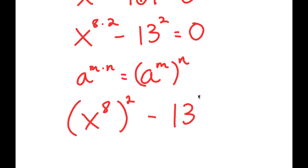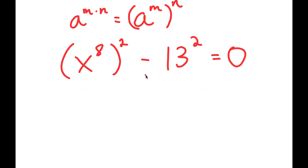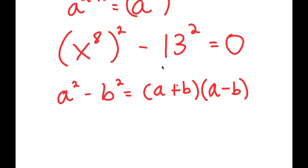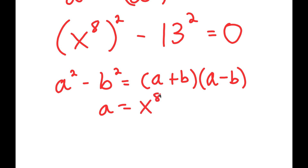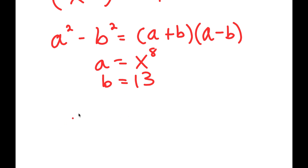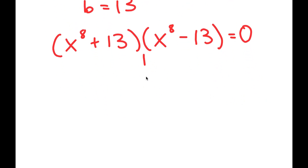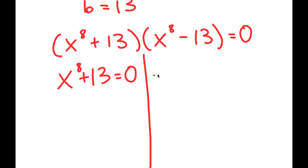Now I have x to the power of 8 squared minus 13 squared equals 0. I'm going to use the difference of squares property: a squared minus b squared equals a plus b times a minus b. Here, a equals x to the power of 8 and b equals 13. So I get x to the power of 8 plus 13 times x to the power of 8 minus 13 equals 0, giving me two equations: x to the power of 8 plus 13 equals 0, and x to the power of 8 minus 13 equals 0.